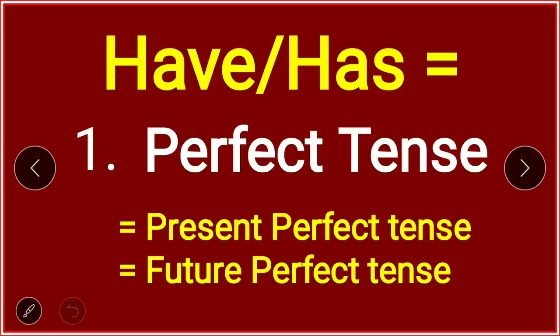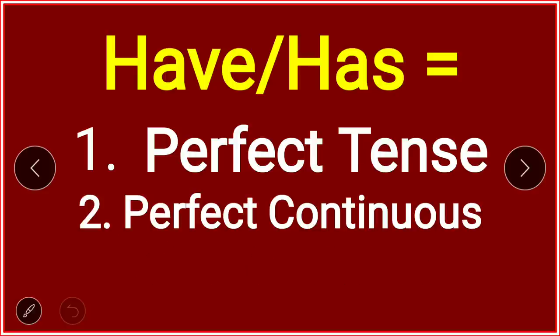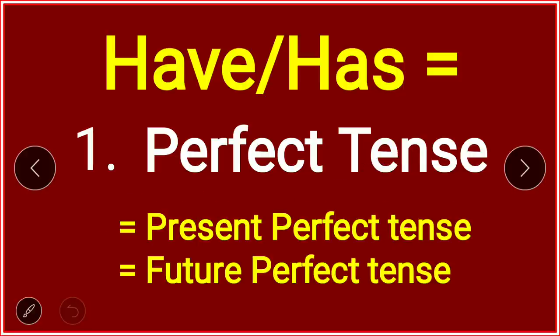So first we will learn perfect tense. It has two parts: one with present perfect tense, one with future perfect tense. Also note: past perfect tense never uses have or has — write this in your mind. So: present perfect and future perfect.